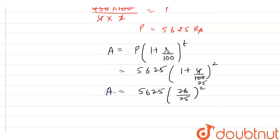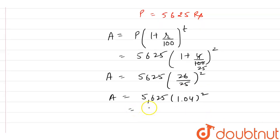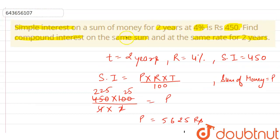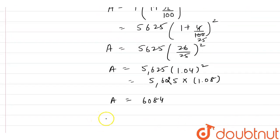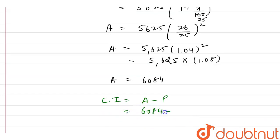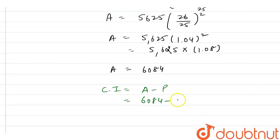This is the value of A. Dividing 26 by 25 gives 1.04, so we have 5625 into 1.04 whole squared, and 1.04 squared is 1.0816. Multiplying gives us the amount A as rupees 6084. The compound interest equals amount minus principal, so CI equals 6084 minus 5625, which gives us rupees 459. This is our final answer.